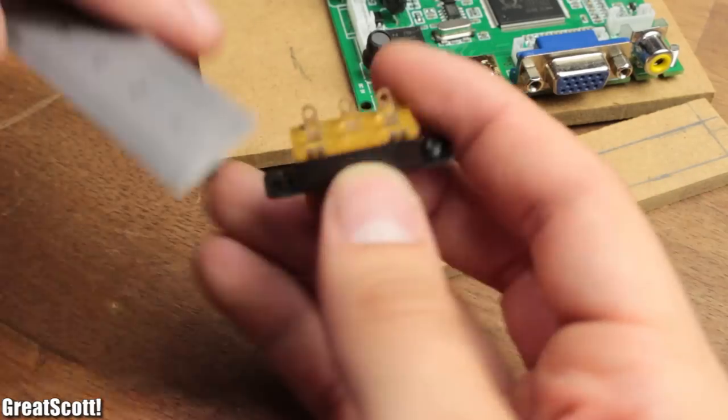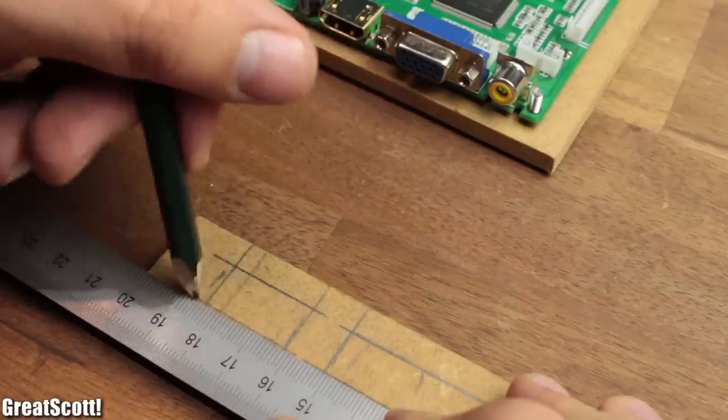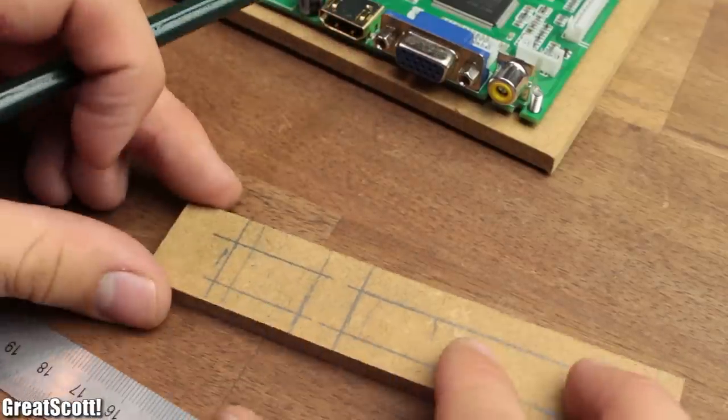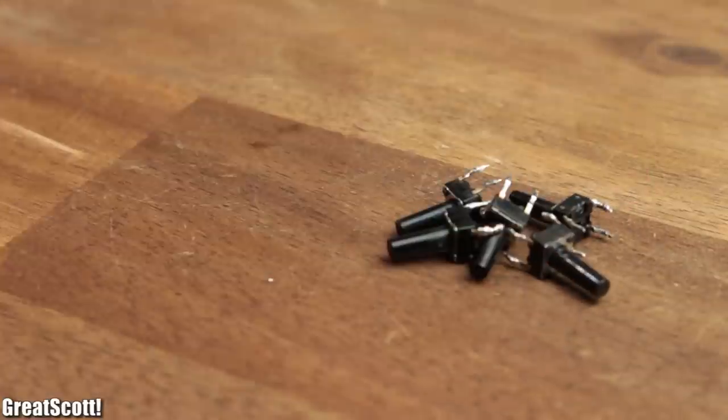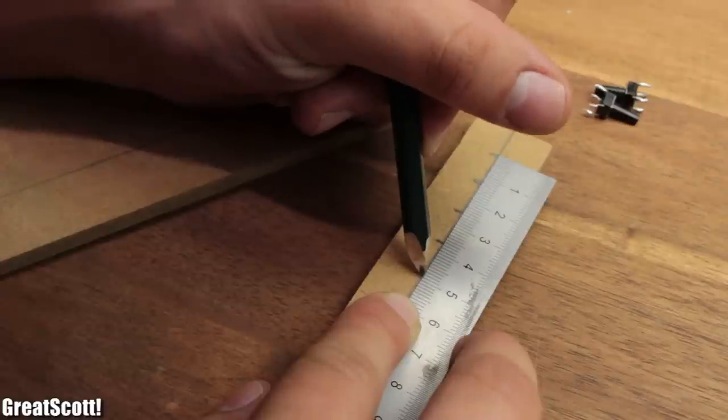And since I am already working on this wall piece I also added the marking for my slide switch which will later cut the power to the boost converter. Then I grabbed five 10mm long push buttons and my right wall piece to mark a nice spot for each of them.